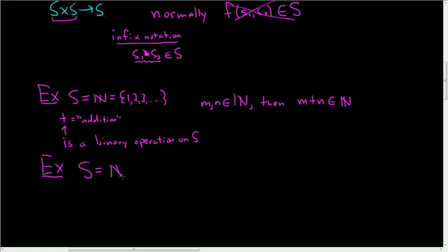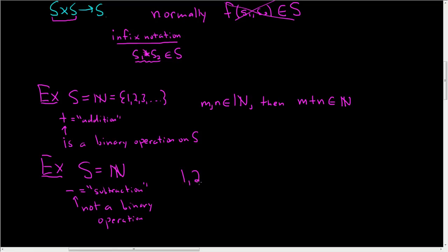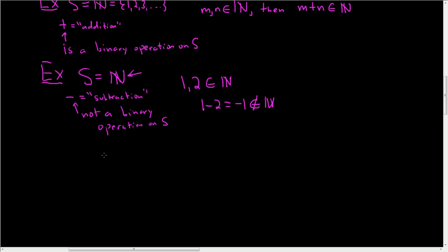Let's look at another example. Take the same set S — the natural numbers — but this time the operation will be subtraction. In this case, subtraction is not a binary operation. Why? Well, if you take the numbers 1 and 2, those are both natural numbers, but 1 minus 2 equals negative 1, and that is not a natural number.